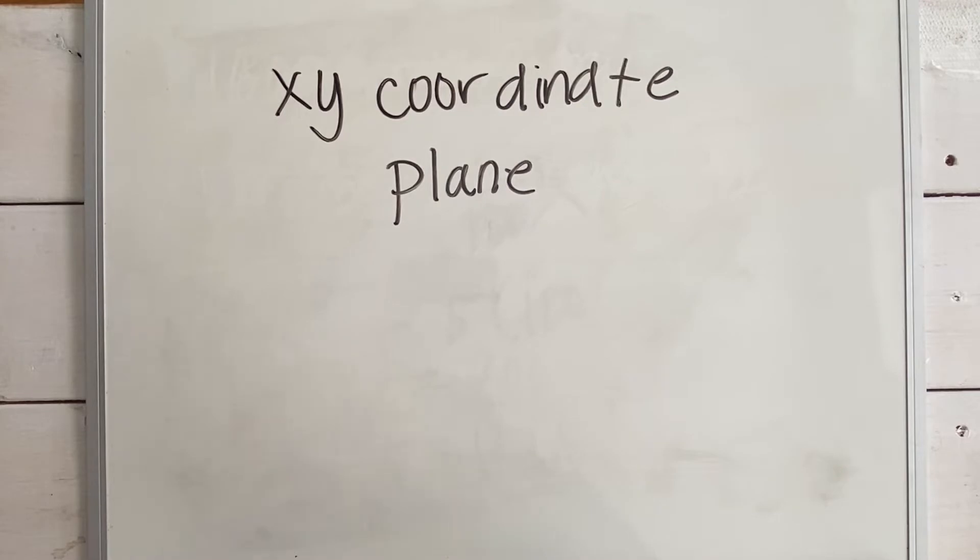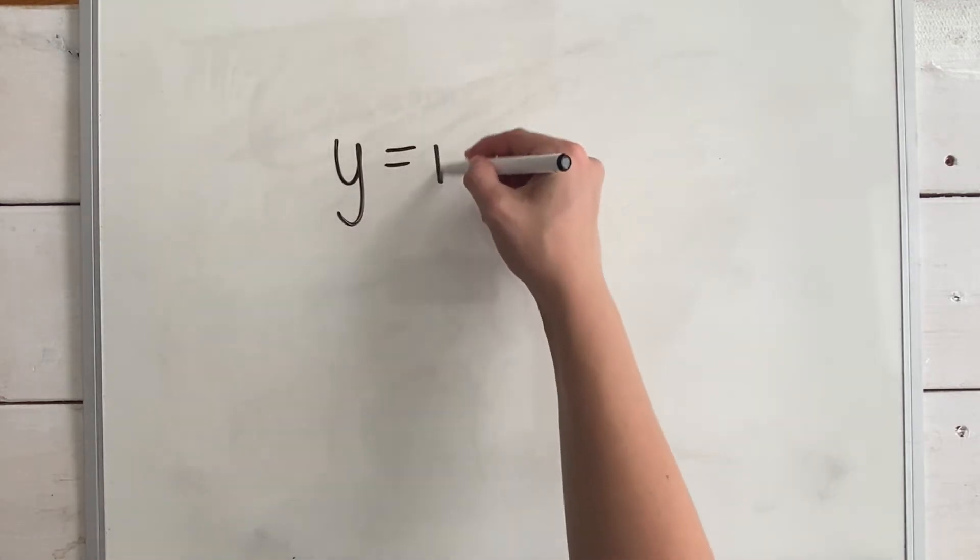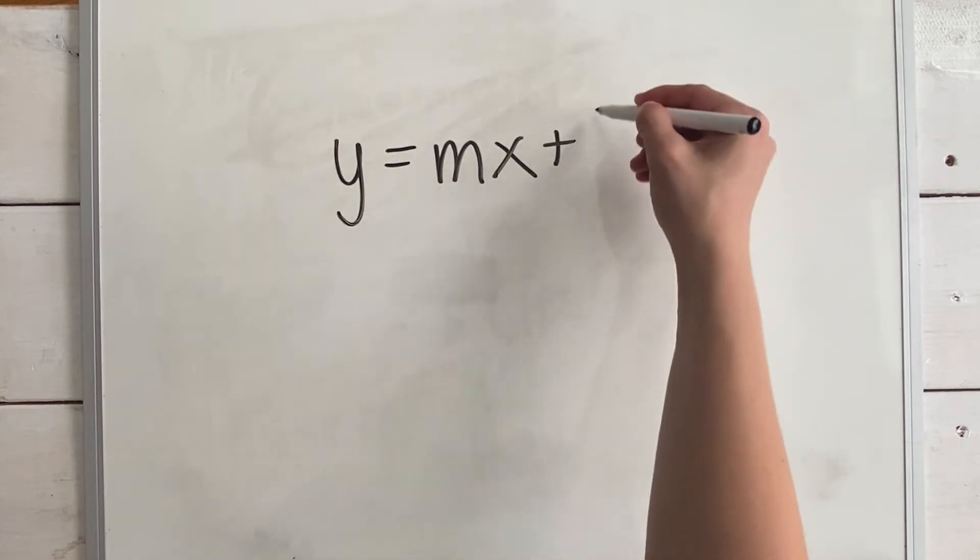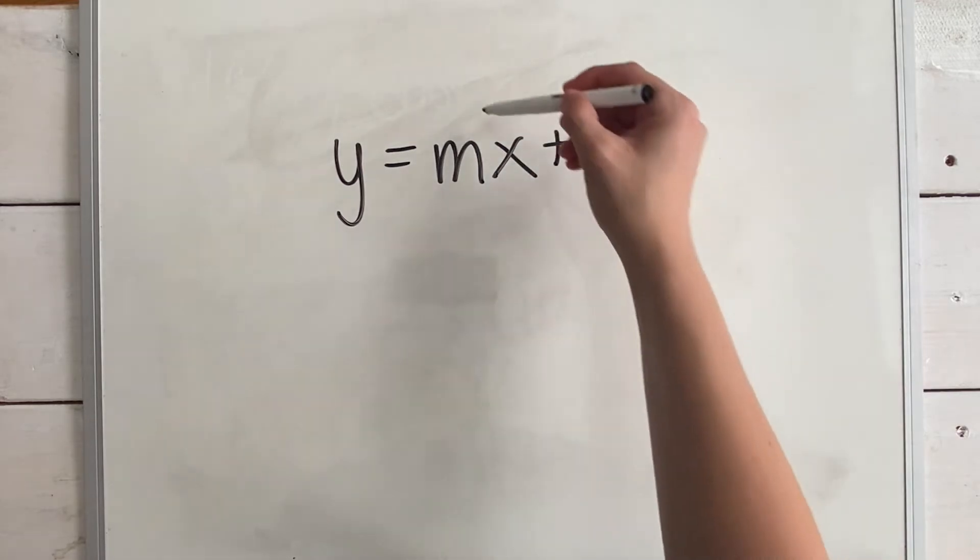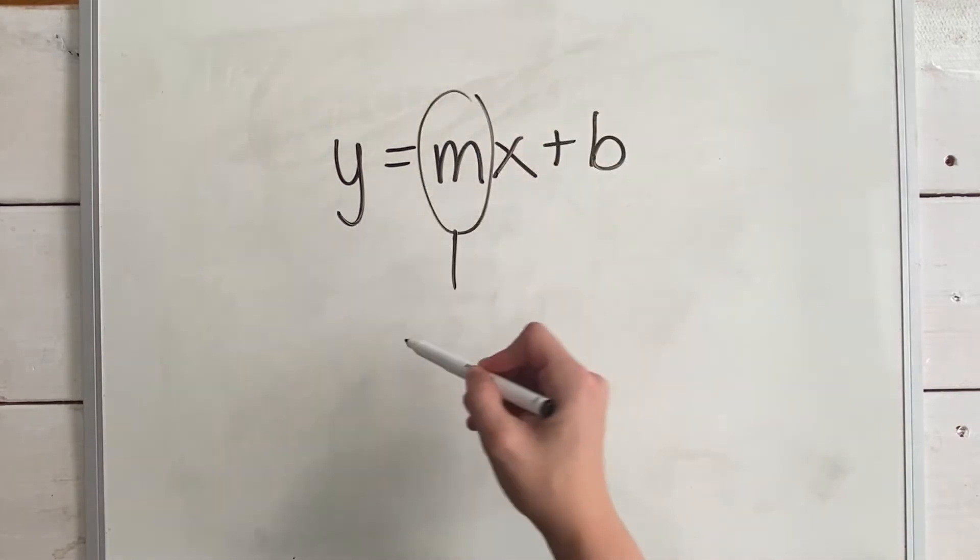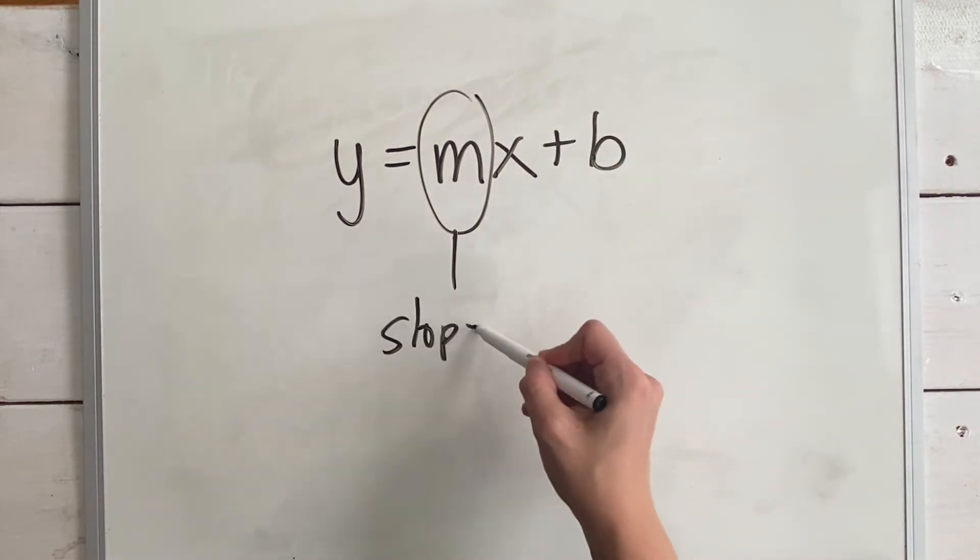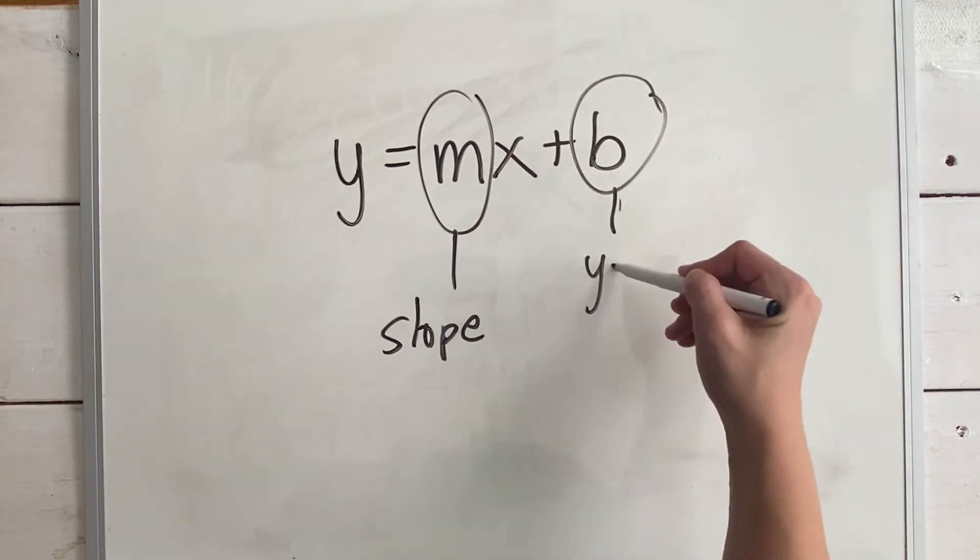Today's topic is graphing lines in the xy coordinate plane. First, let's take a look at the slope-intercept form of the equation of a line: y equals mx plus b. This is often the most useful form to get your equation into in order to answer test questions because we can see both the slope and the y-intercept just by looking at the equation. The m represents the slope and the b is the y-intercept.